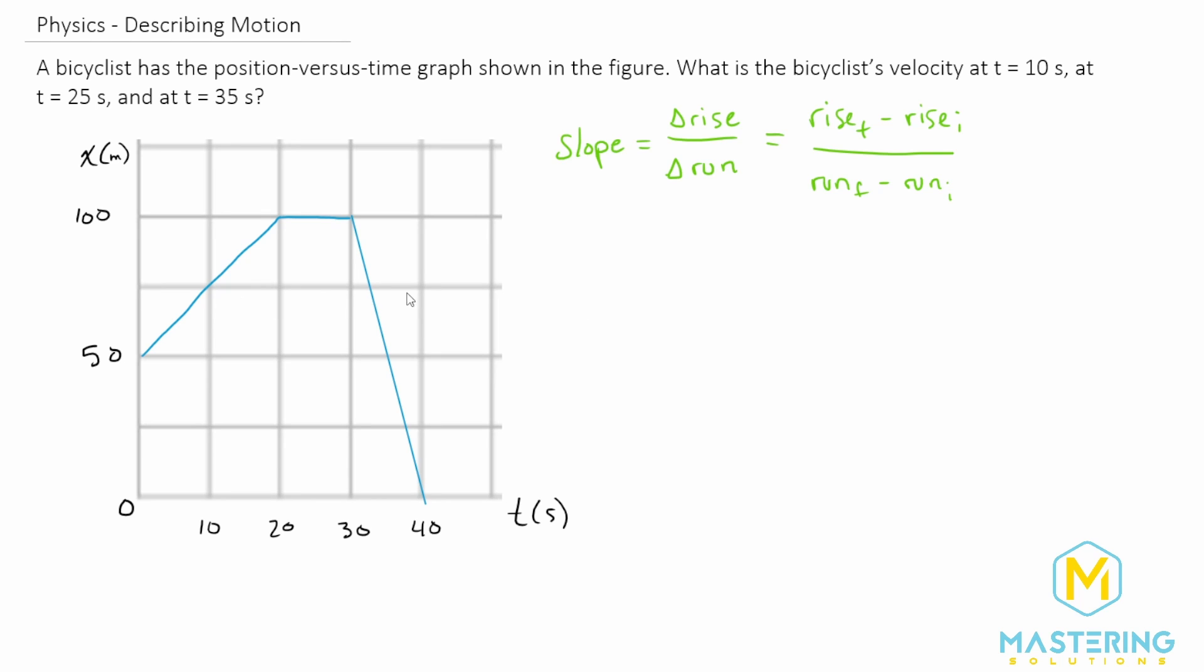Why does the slope give us the velocity? If you think about it, the formula for velocity is equal to the change in x. But what is the change in the rise? It's the change in the position. And what is the change in the run? It's the change in time. But we just wrote the formula for velocity, so that is why the slope gives us the velocity because the rise is the position and the run is the time.